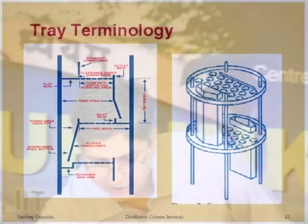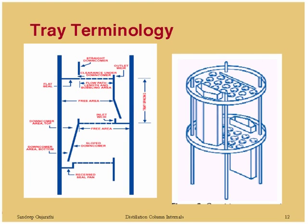The inlet weir can be used when a static seal is not available — meaning the downcomer clearance is higher than the exit weir height. In that case, an inlet weir taller than the exit weir height provides sealing of the downcomer to avoid vapor flowing up through it. This is one option even in conventional trays to handle that situation.